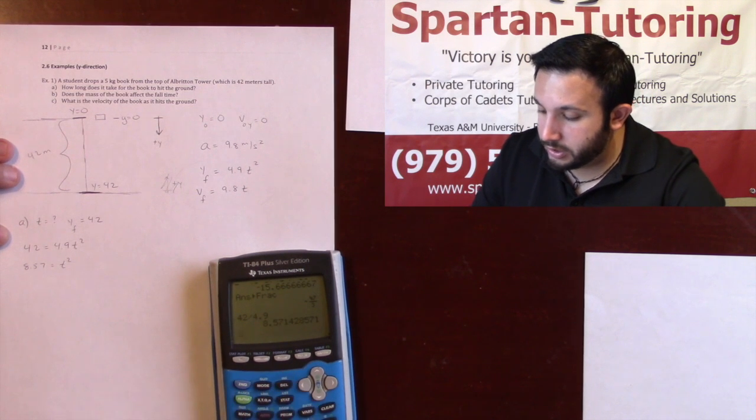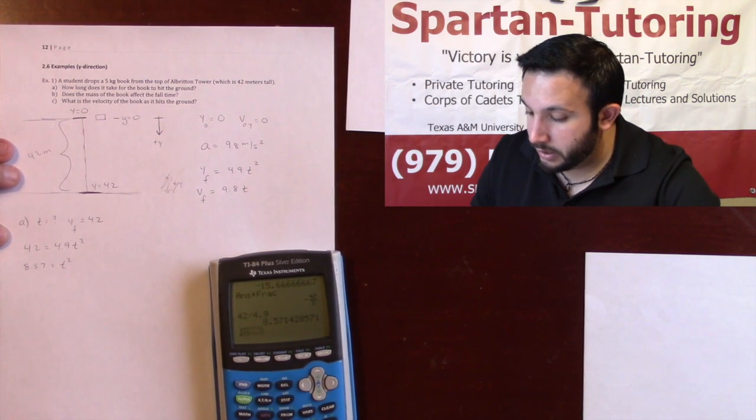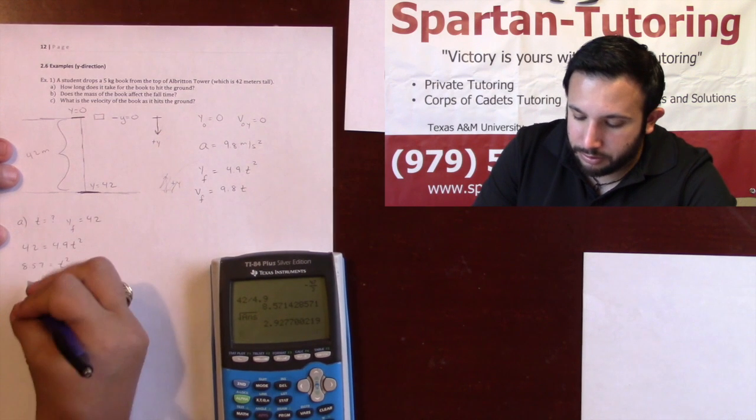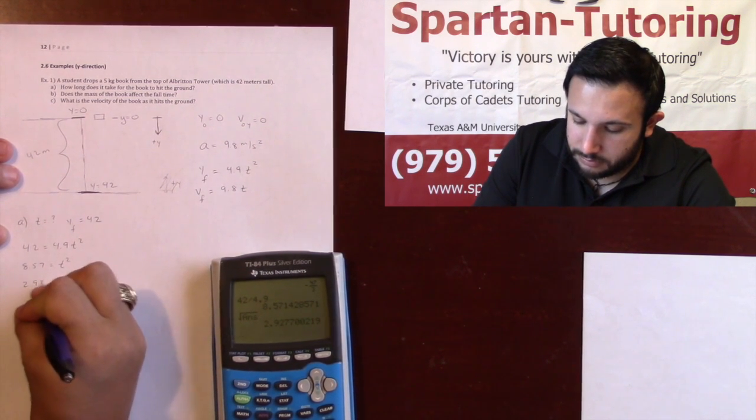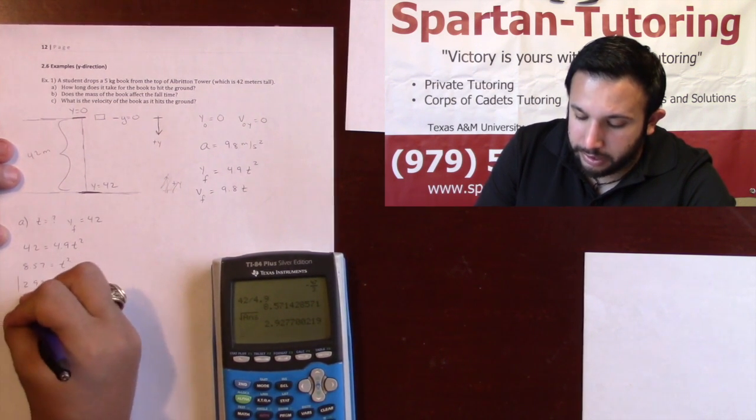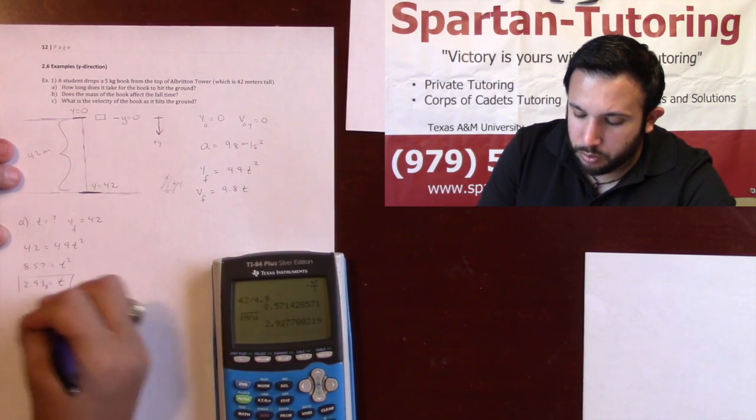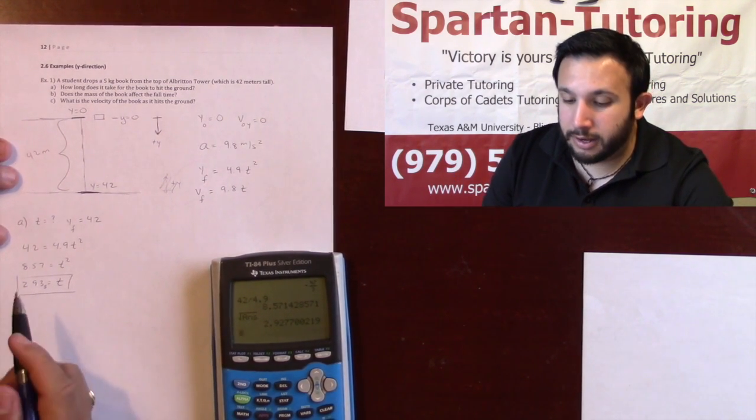8.57 is equal to t squared, and when I take the square root of each side, you get 2.93. So for part a, it takes 2.93 seconds for it to hit the ground.